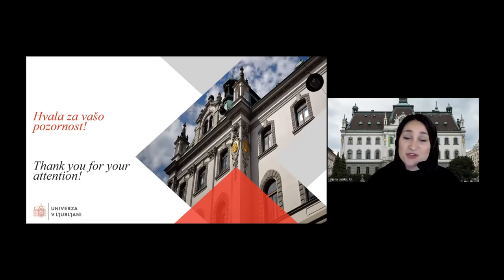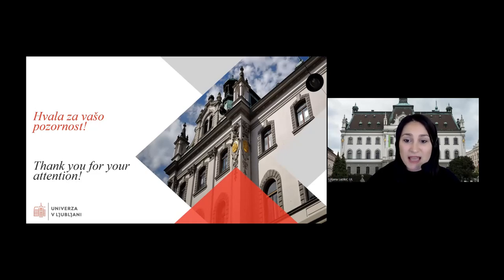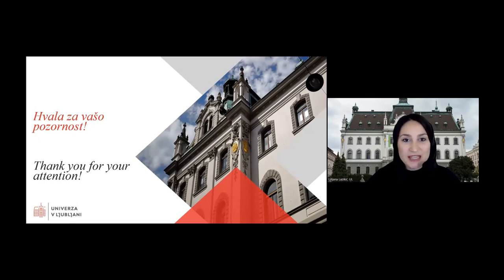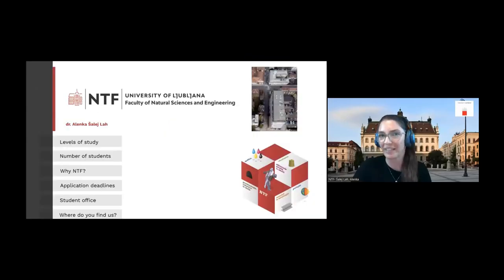The Faculty of Natural Science and Engineering consists of four departments: the Department of Geology, the Department of Geotechnology, Mining and Environment, the Department of Materials and Metallurgy, and the Department of Textiles, Graphic Arts and Design. Study programs are offered at all degree levels and include graphic and media communications, textiles, fashion design, materials and metallurgy, geology, geotechnology, and mining and environment. With us today is Alinka Shailen-Lach. Welcome to the presentation of the Faculty of Natural Science and Engineering.